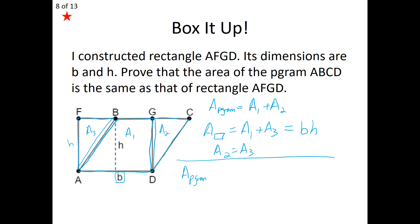So the area of our parallelogram is the sum of A sub 1 plus A sub 2. Every time we see A sub 2, we know it equals A sub 3 by the area congruence postulate. So replace A sub 2 with A sub 3, giving us A sub 1 plus A sub 3. But A sub 1 plus A sub 3 is the area of our rectangle, which is base times height. By transitivity, we derive our end result: the area of our parallelogram is simply base times height.